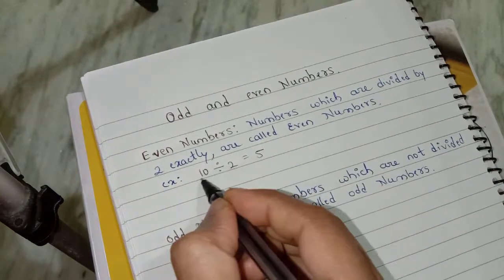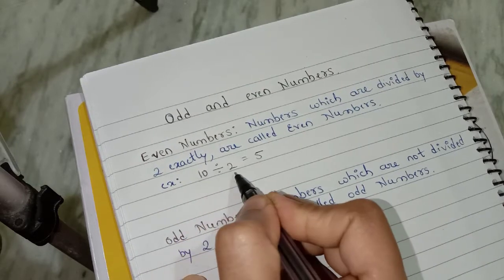So here I will get 5. So here 10 I can divide by 2 exactly.